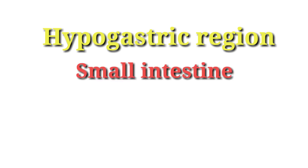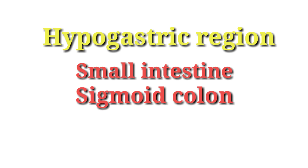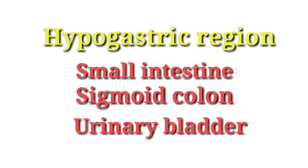The hypogastric region is the middle lower quadrant of the abdomen. Organs lying in the hypogastric region are the small intestines, sigmoid colon, and urinary bladder.